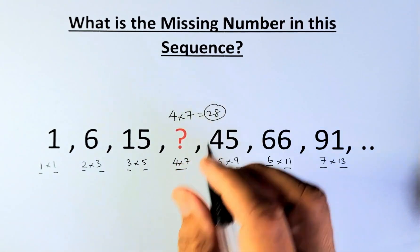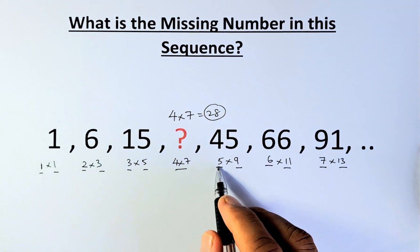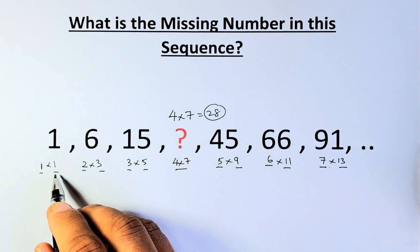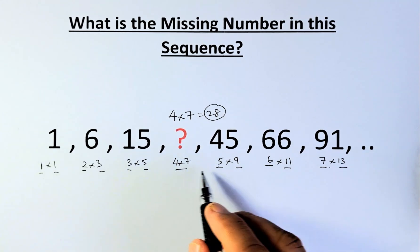The answer is 28, because the first sequence is 1, 2, 3, 4, 5, 6, 7, and the second number sequence is 1, 3, 5, 7, 9, 11, 13.